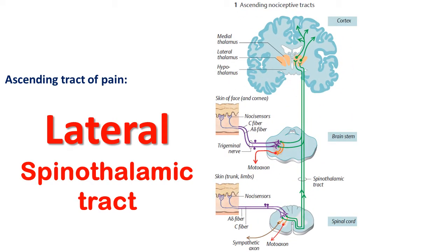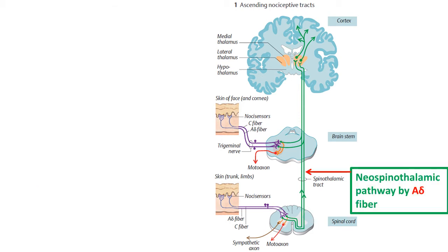There are two types of pathways within the lateral spinothalamic tract: the neospinothalamic pathway, formed by the A delta fibers, and the paleospinothalamic pathway, formed by the C fibers.